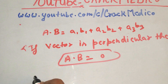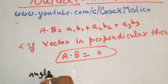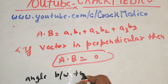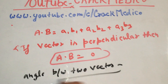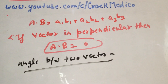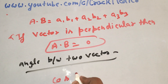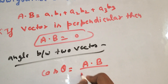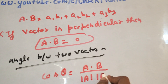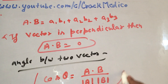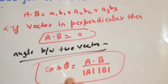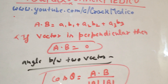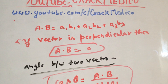The next thing we need is the angle between two vectors. The formula for the angle between two vectors is: cos θ equals A·B divided by the modulus of A into the modulus of B. Please remember both formulas — they are very useful when we practice questions.